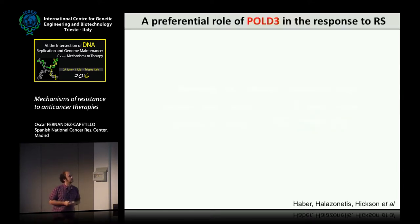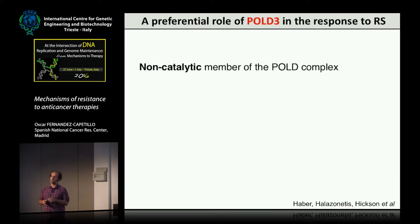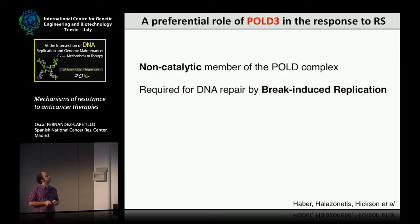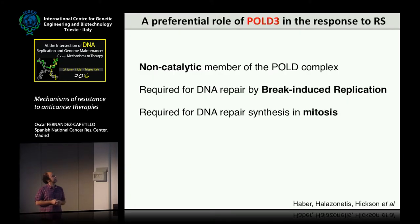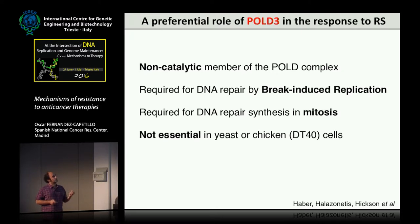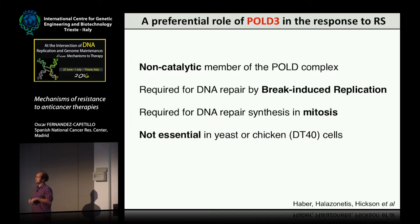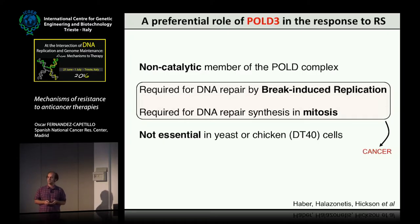And here comes Pol D3. Due to work from people like Jim Hayward, Thanos Halazonetis, Hickson, and others, we know Pol D3 is a non-catalytic member of the Pol D complex. It has been shown to be important for break-induced replication, which is important for the repair of broken forks. It was also shown by Ian Hickson to be required for DNA repair synthesis in mitosis. Interestingly, it's not essential in S. cerevisiae or chicken DT40 cells, raising the idea that you could target it and this would be more important for cancer cells than normal cells.